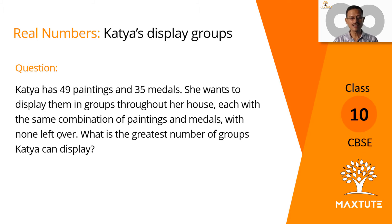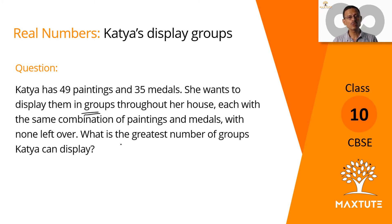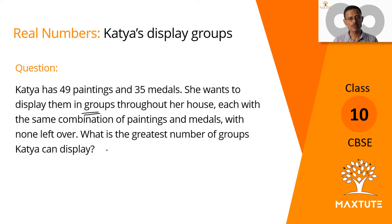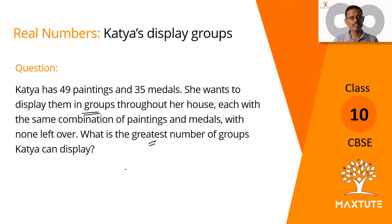Let's get started. Katya has 49 paintings and 35 medals. She wants to display them in groups throughout her house, each with the same combination of paintings and medals with none left over. What we need to find out is the greatest number of groups that Katya can display them in.